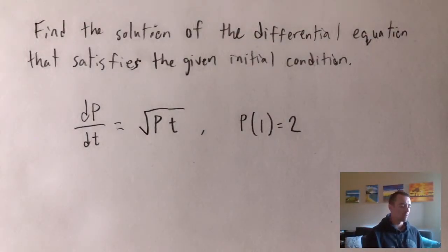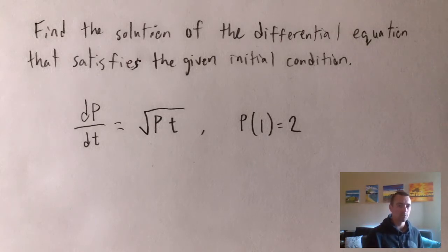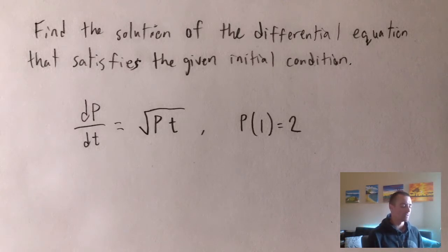Hey guys, Jake here coming at you with another math problem today. I'm going to be showing you how to find a solution of an initial value problem — how to find the solution of a differential equation given some initial condition. We're going to find the solution of dp/dt equals the square root of p times t, where the initial condition is p(1) equals 2.